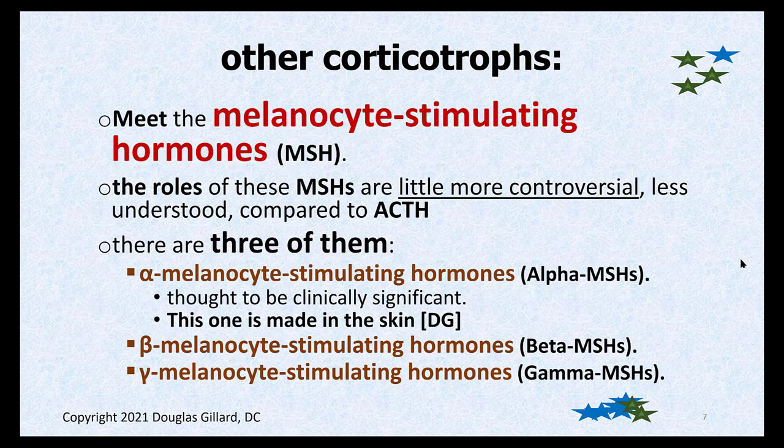What about other corticotrophs? There's more controversy around the melanocyte-stimulating hormones — the MSH hormones. There are three main ones: alpha, beta, gamma. Alpha MSH is thought to be clinically significant because it lives between the epidermis and dermis. It stimulates melanocytes to produce melanin and pigment keratinocytes. The more melanin injected into keratinocytes — your skin cells — the darker you are.